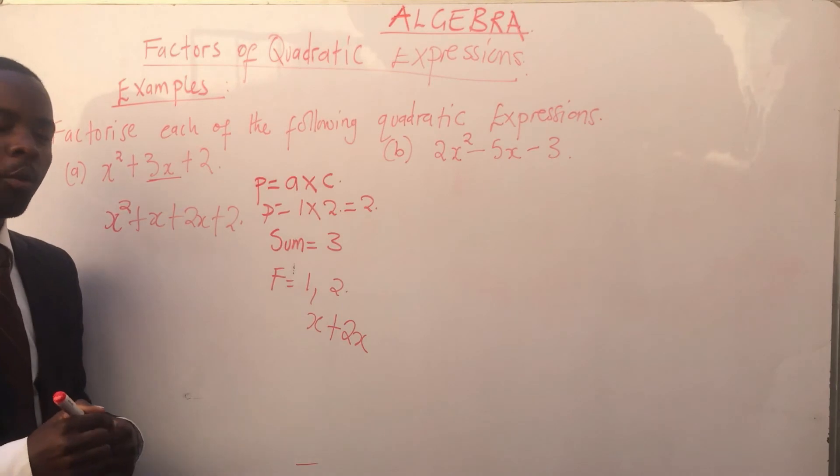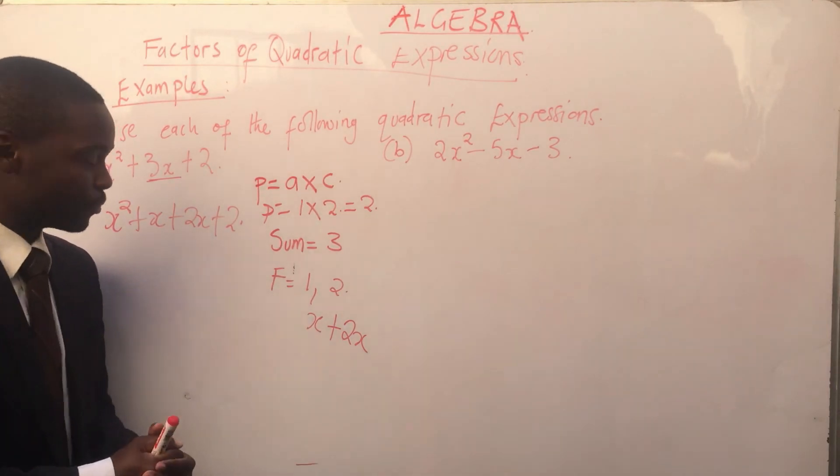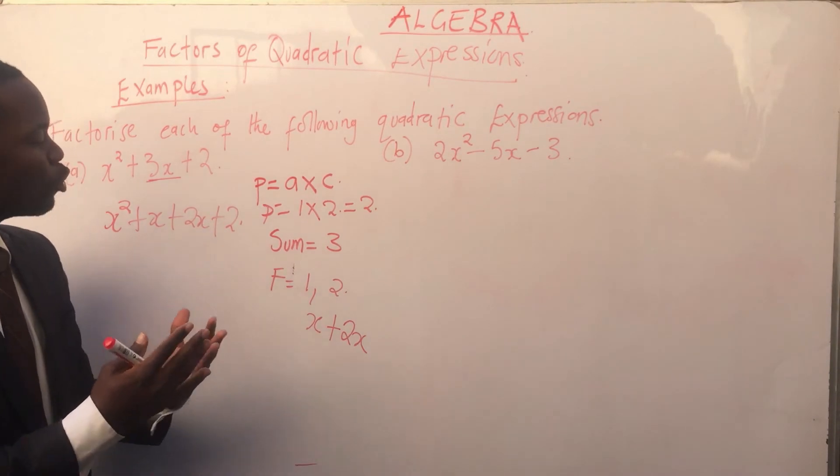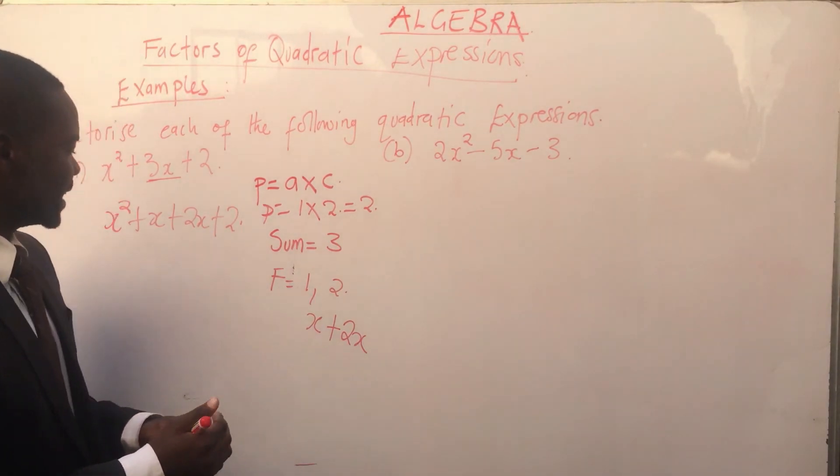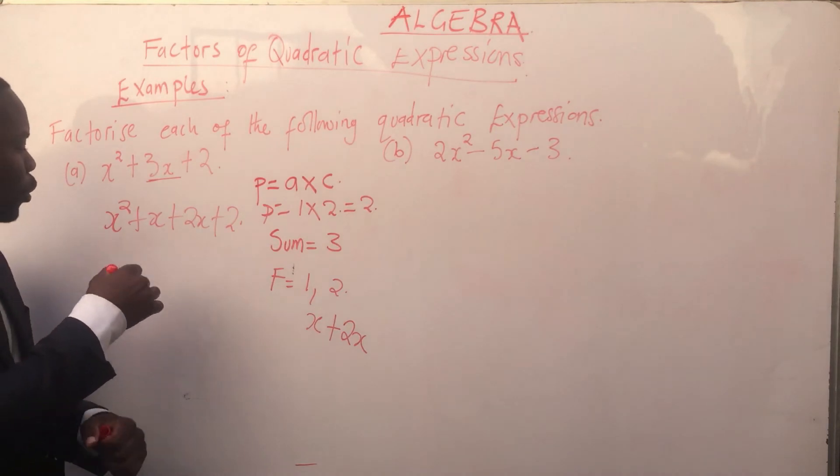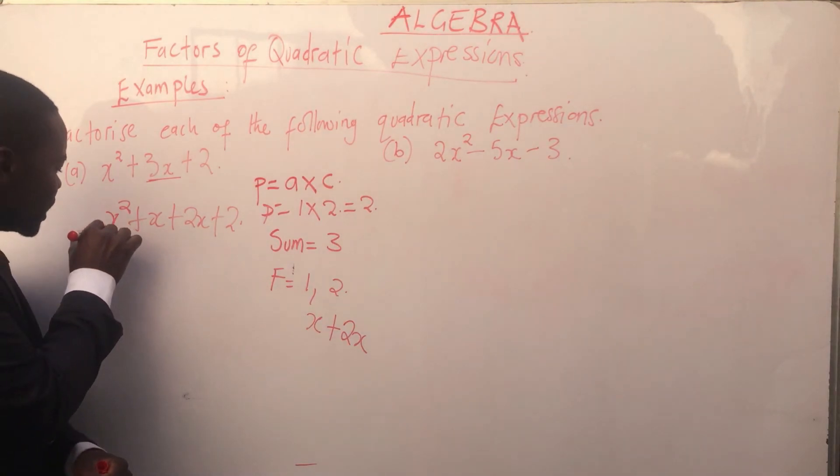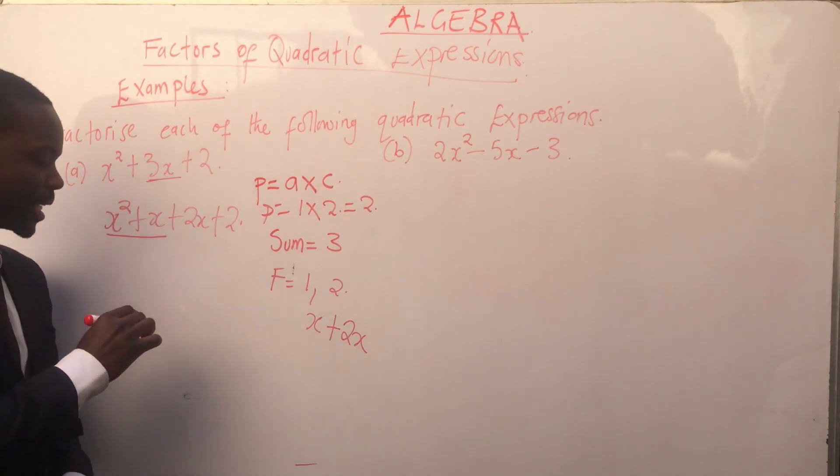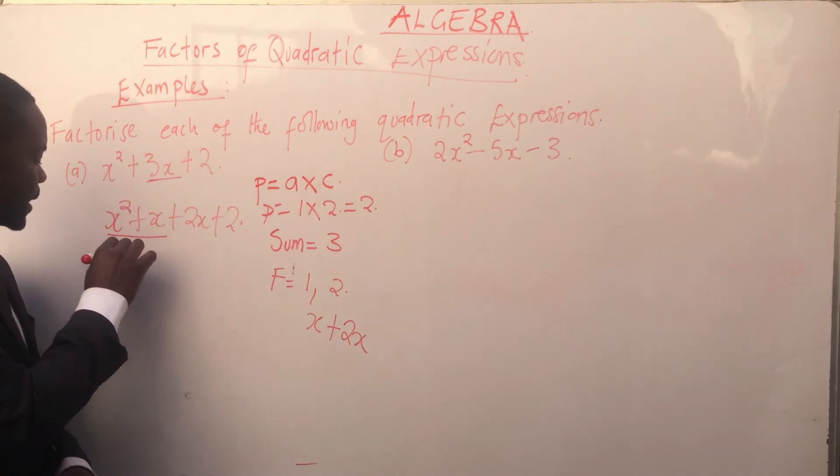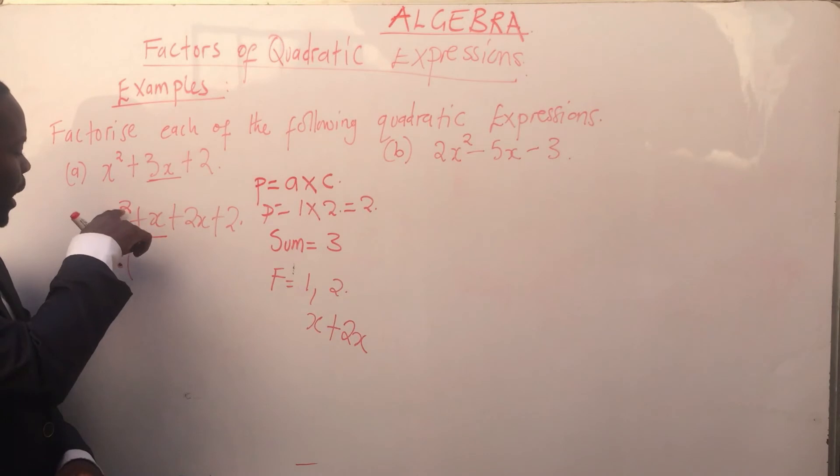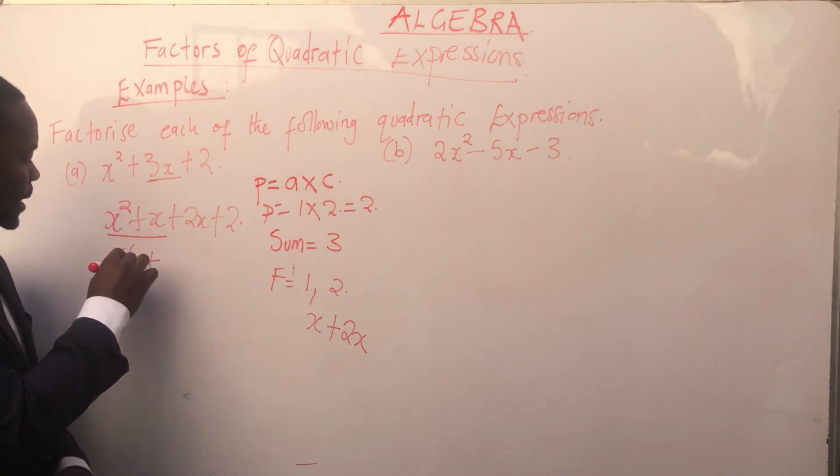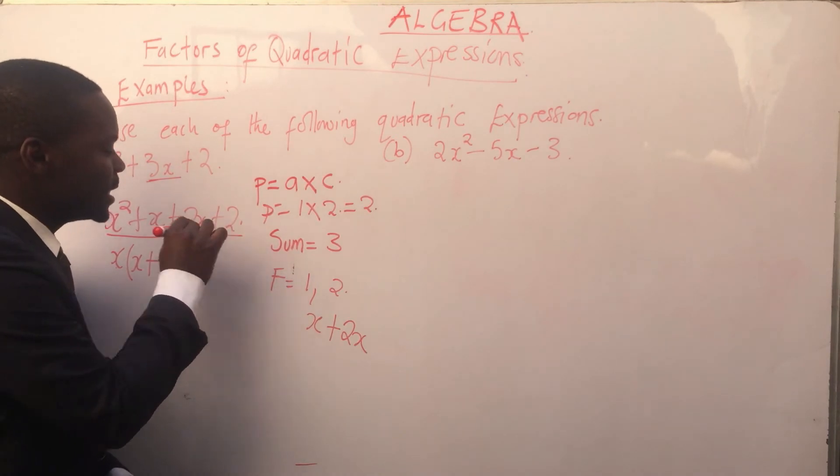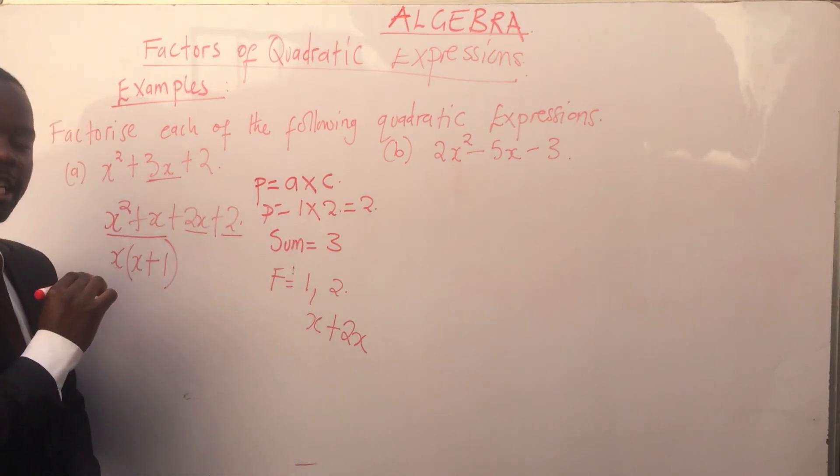From here, we move to step 3, which says we must factorize by grouping like terms. This means we will identify which is a common factor. Between this term and this term, a common factor is x. So x into x² is x, and x into x is 1. Then we have these terms.